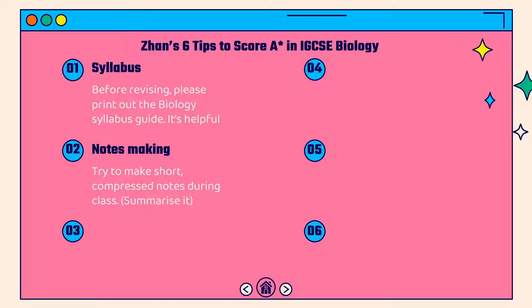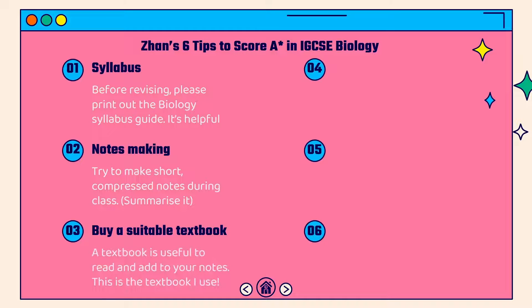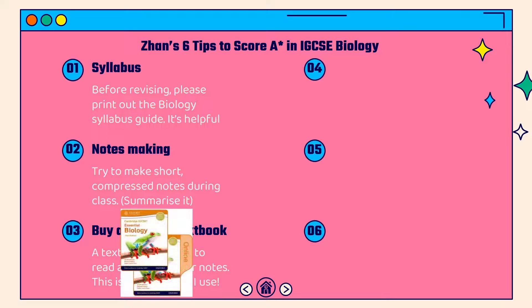You definitely need to buy a suitable textbook. A textbook is useful to read and add information to your notes. The one I use is the Cambridge IGCSE Essential Biology 3rd Edition. I think it's very concise — not as wordy as other textbooks. It's widely available and I will link it below.